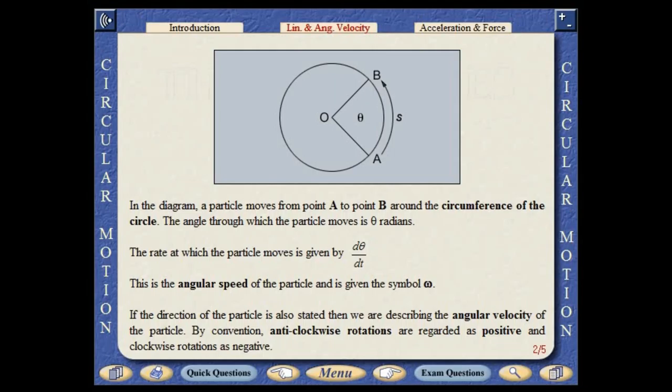The rate at which the particle moves is known as the angular speed of the particle and is given the symbol omega. If the direction of the particle is also stated, then we are describing the angular velocity of the particle. By convention, anticlockwise rotations are regarded as positive and clockwise rotations as negative.